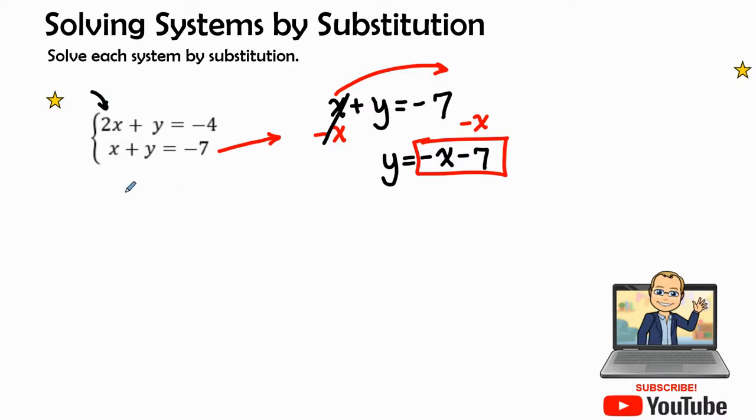We're going to go ahead and write our top equation of 2x plus y and the y we're going to substitute this expression in for y. So I'm going to open up my parentheses equals a negative 4. So when I substitute in this negative x minus 7, I'm going to go ahead and simplify.